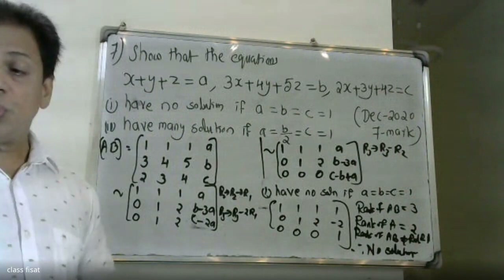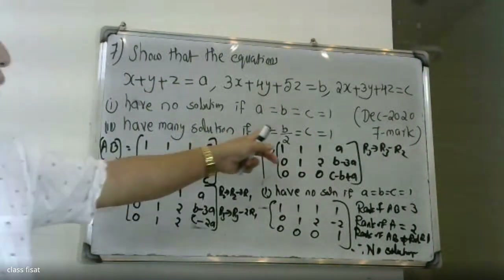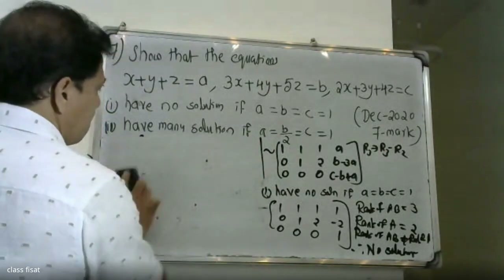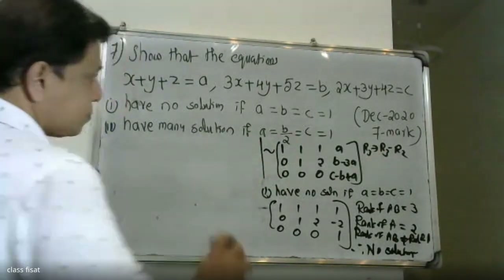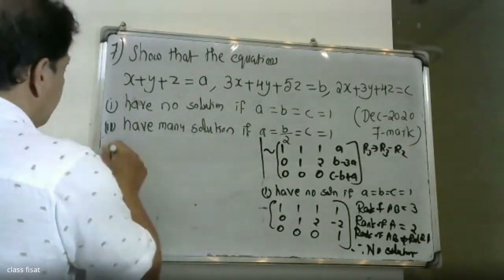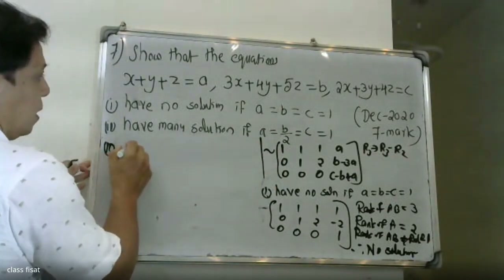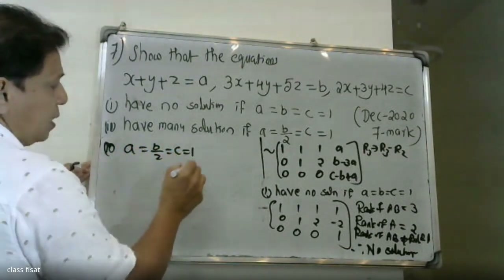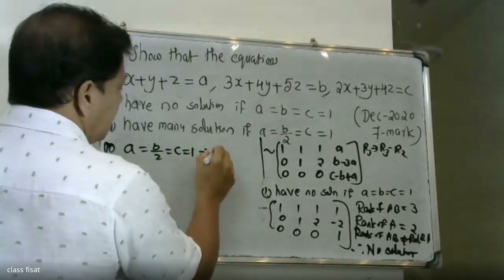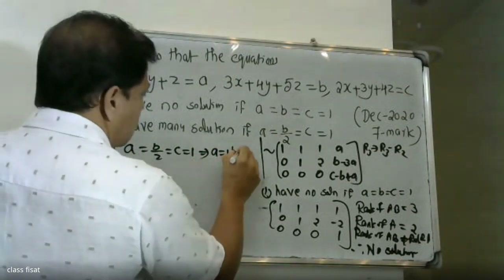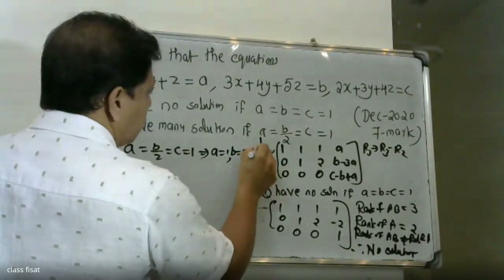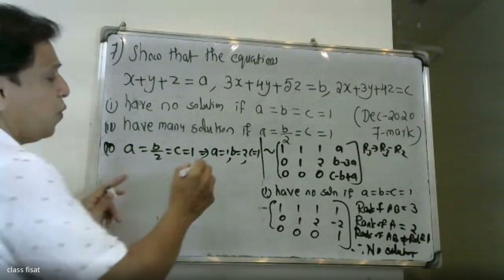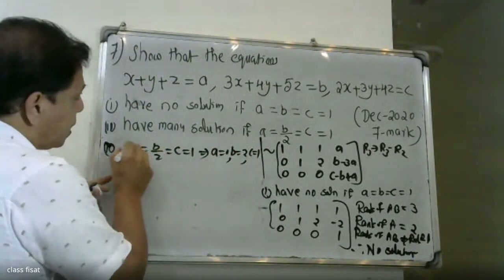Second case: how many solutions if a equals b divided by 2 equals c equals 1? The answer is the second case with a equals c equals 1, b equals 2.